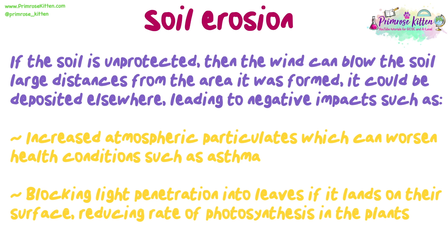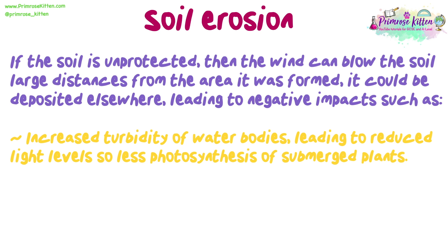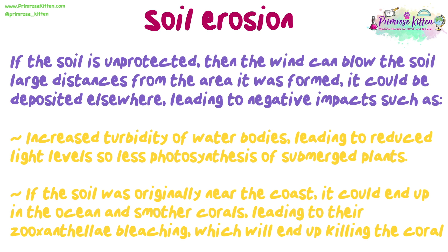Blocking light penetration into leaves if it lands on their surface, reducing the rate of photosynthesis in the plants. Increased turbidity of water bodies leading to reduced light levels, so less photosynthesis in submerged plants. If the soil was originally near the coast, it could end up in the ocean and smother corals, leading to their zoanthellae bleaching, which will end up killing the coral.